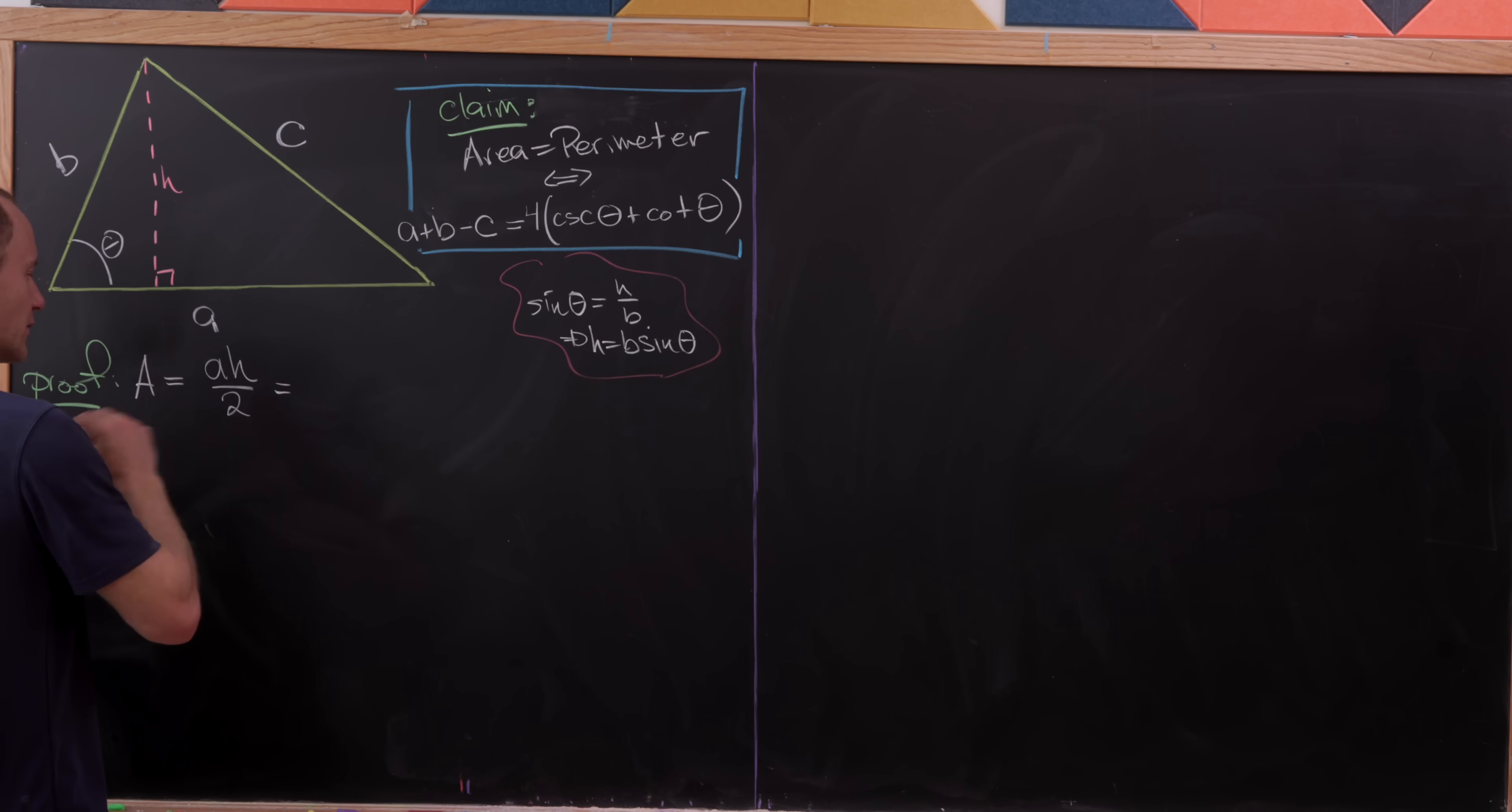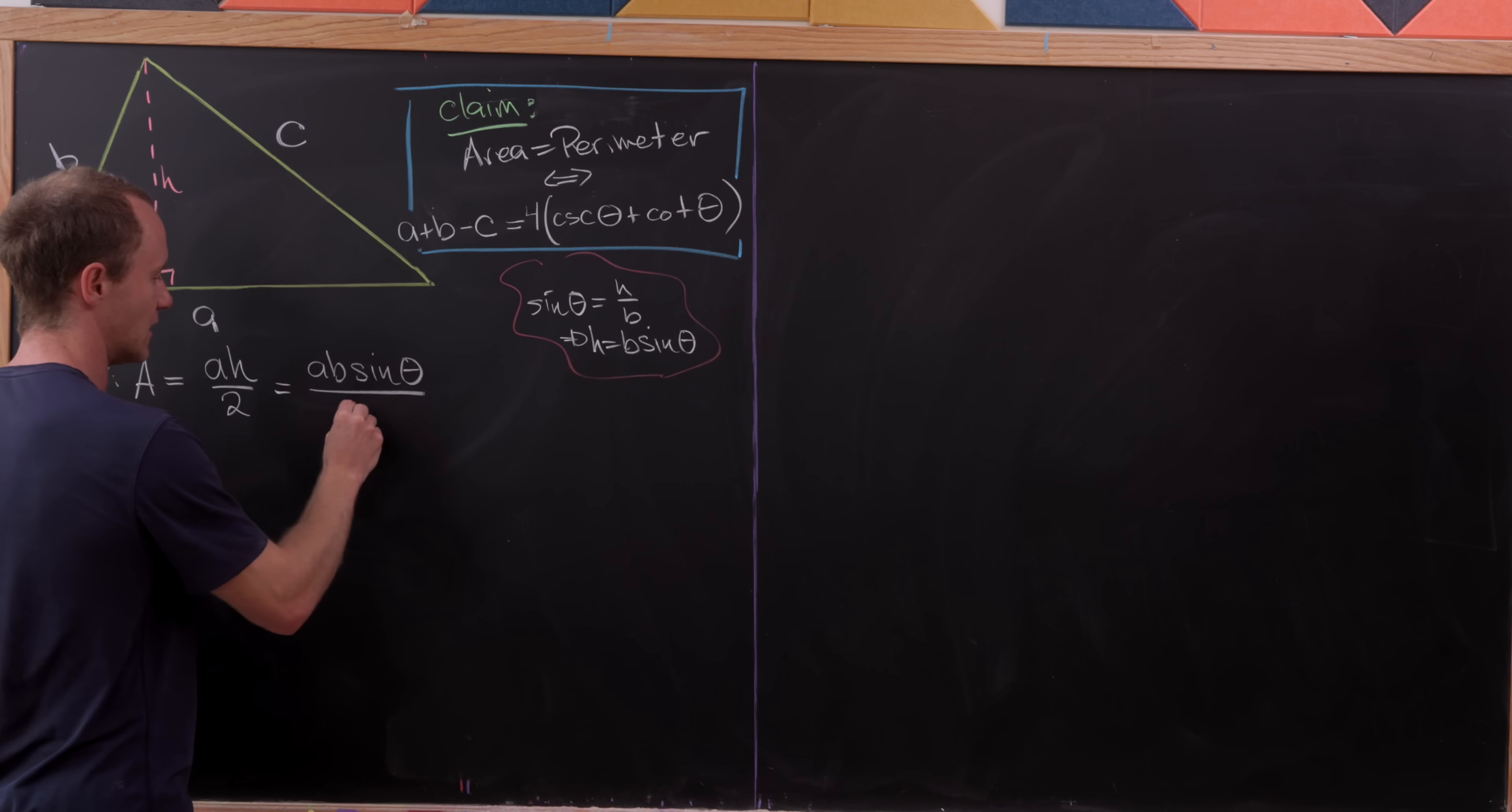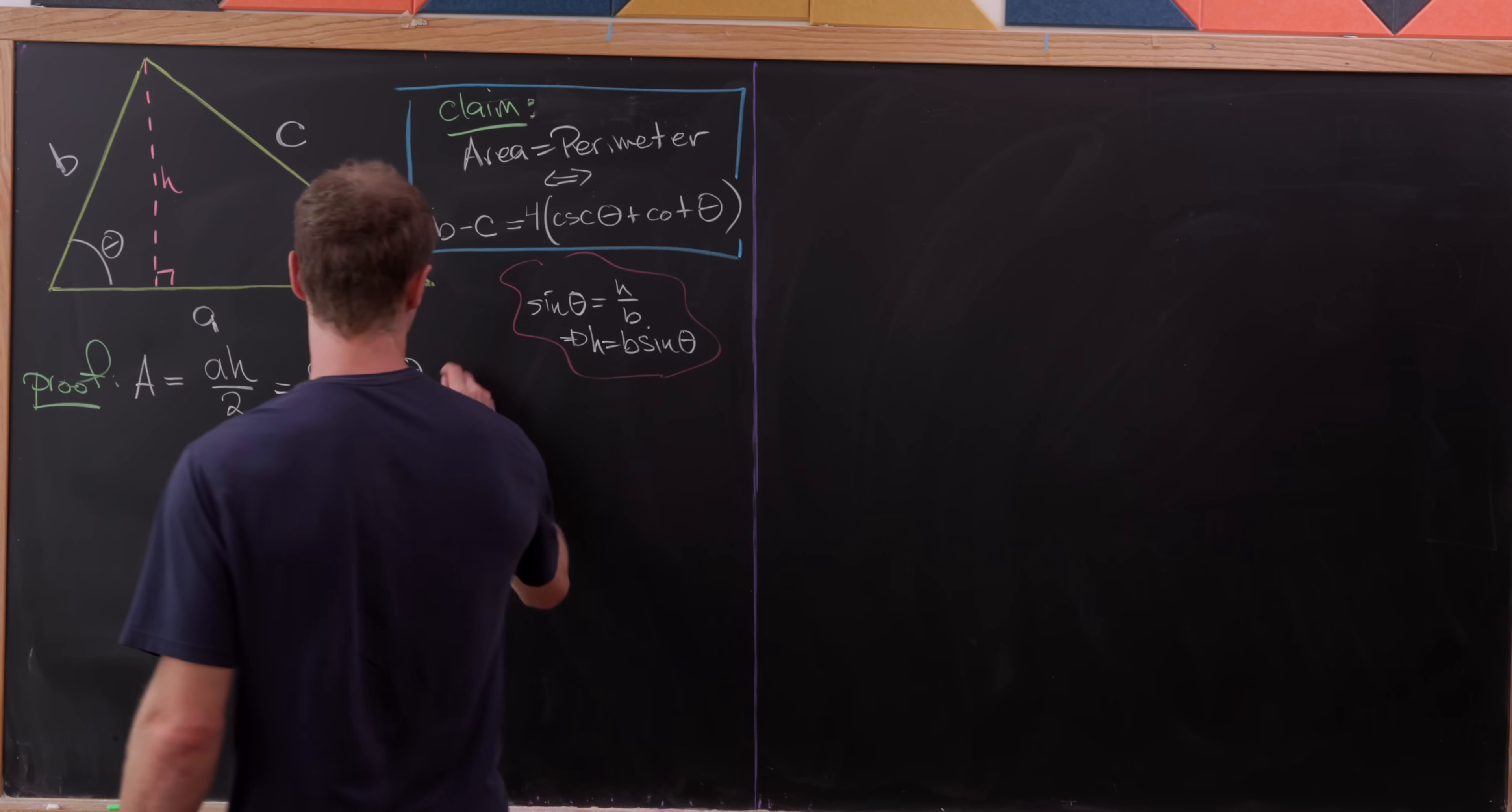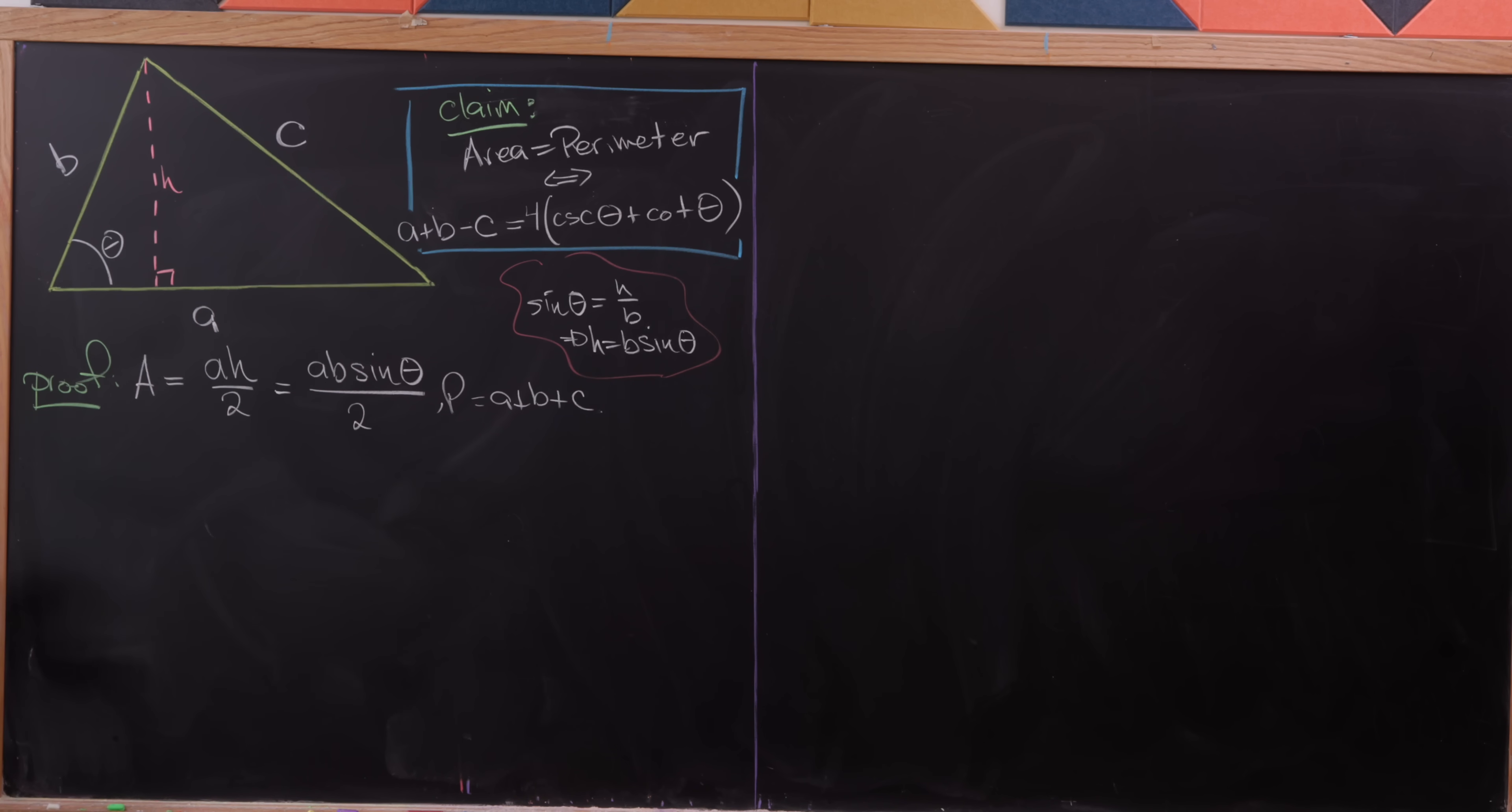So putting that together, we have the area is a times b times the sine of theta over two. But now the perimeter is simply equal to a plus b plus c. There's nothing really going on there.